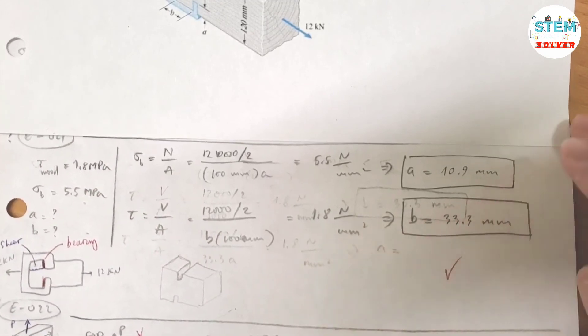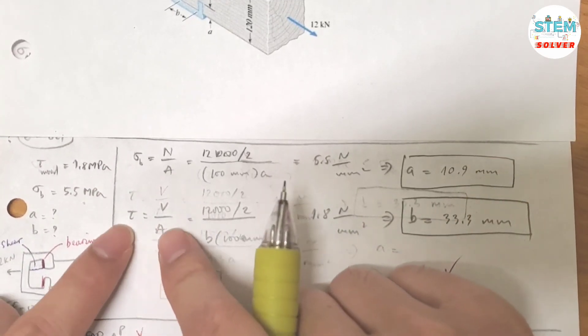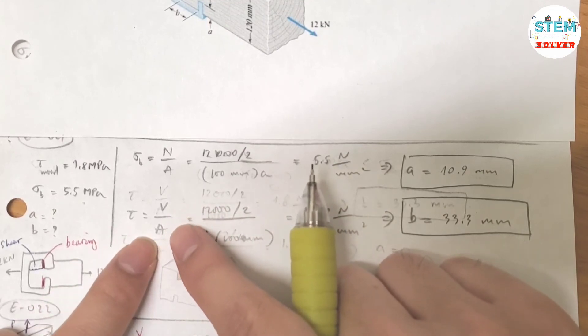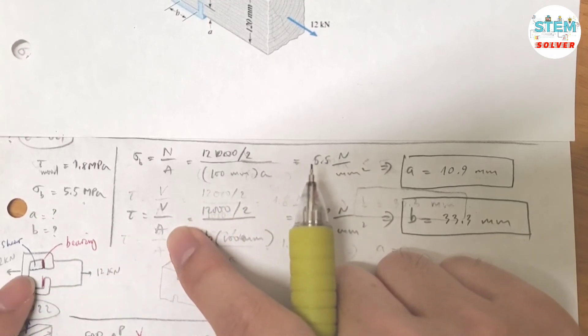Now, doing the same thing, same process for the shear stress. Shear stress is equal to shear force divided by the area. What is the area? The crack is creating along the post, parallel to the post for the shear.